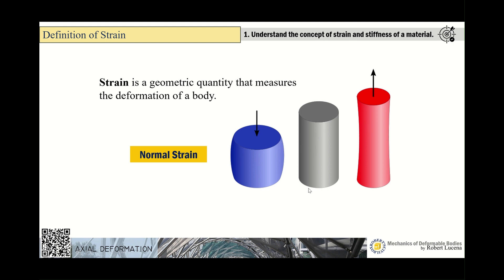The behavior shown in the figure is normal strain. When the deformation is normal to the surface — meaning the load is applied on the object and it deforms along its longitudinal axis — that is what we call normal strain.